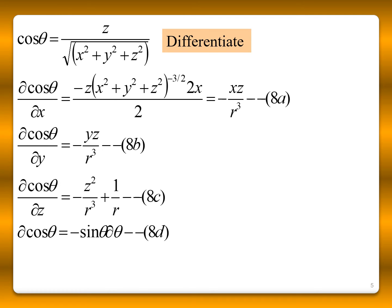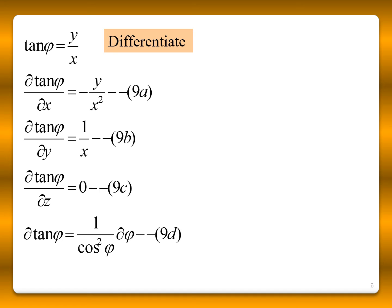For cos θ = Z / √(X² + Y² + Z²), differentiating gives: ∂cosθ/∂x = −XZ/R³, ∂cosθ/∂y = −YZ/R³, and ∂cosθ/∂z = −Z²/R³ + 1/R. Also, the differential of cos θ is −sin θ dθ. For tan φ = Y/X: ∂tanφ/∂x = −Y/X², ∂tanφ/∂y = 1/X, and ∂tanφ/∂z = 0. The differential of tan φ is (1/cos²φ) dφ.